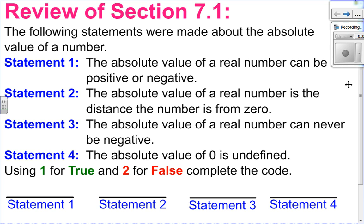I have four statements made about absolute values of a number. We have to decipher them as true or false. First statement: the absolute value of a real number can be positive or negative. Hopefully you recognize that as false. That's the definition of an absolute value — it's the distance a number is from zero, so it can't be negative. It has to be positive.